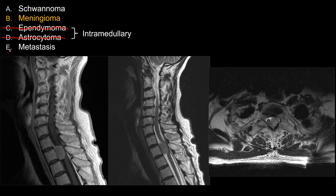For choice E, metastasis — certainly I cannot look at this and say this absolutely cannot be metastasis; there's always a possibility. But as far as the board exam is concerned, and also in real life, this is not the most typical appearance for metastasis. A solitary lesion without other involvement or drop metastases is a little unusual. Typically, I would expect to see other signs of leptomeningeal disease, such as sugar-coating along the pial surface. So I would not pick metastasis over A or B in this scenario.